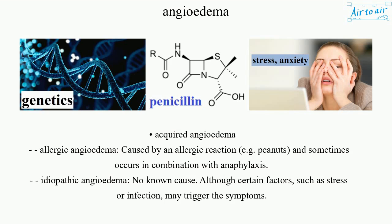Acquired angioedema. Allergic angioedema: caused by an allergic reaction, e.g. peanuts, and sometimes occurs in combination with anaphylaxis. Idiopathic angioedema: no known cause, although certain factors such as stress or infection may trigger the symptoms.